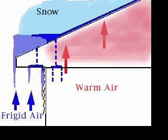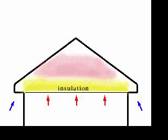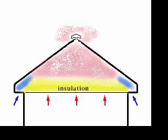The most important factor in reducing ice dams is ventilation. The heat which builds in the attic needs an escape. Adding a ridge vent at the top of the roof will allow much of the heat to escape at the highest point. Incorporating soffit vents allows cool air to be drawn in at the base of the roof, further reducing the temperature.